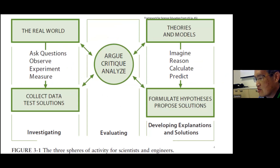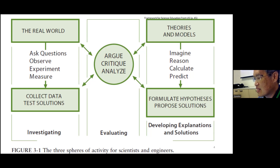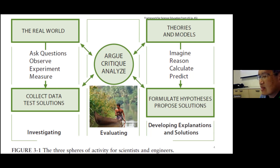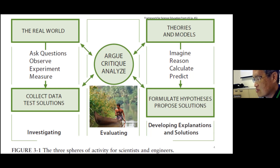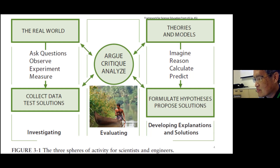The practices of science are useful because they fall into three clusters, or what we call the three spheres of activity. On the left-hand side is the investigating sphere; on the right-hand side is the developing explanations and solutions sphere; and the middle part, which connects every part, is the evaluation sphere. When we think of it this way, this is how science research is conducted — you investigate, you find explanations and solutions, and when you have tentative ideas you need to check, argue, critique, and analyze whether they are sound, valid, and reliable. This is a more authentic way of doing science.